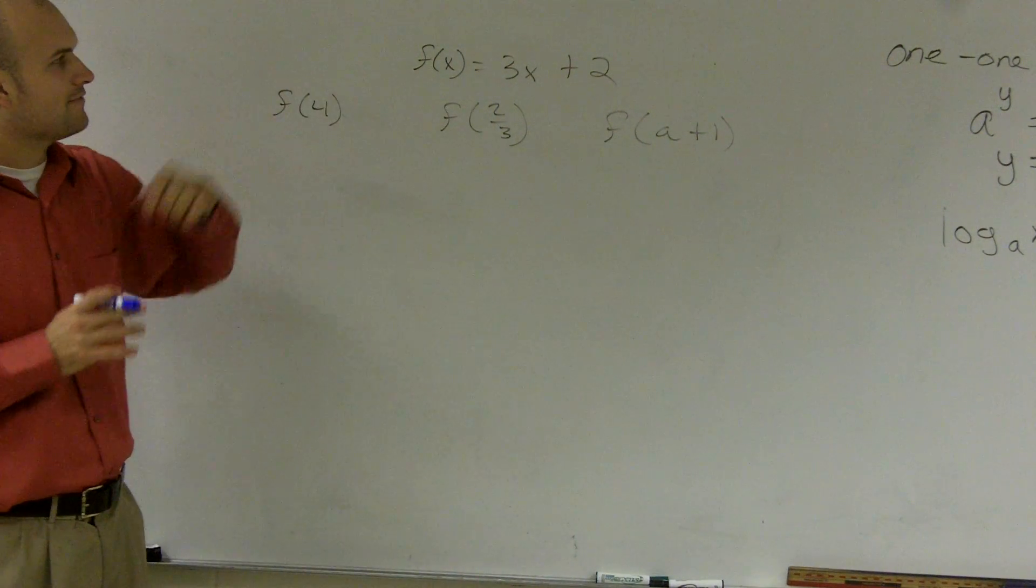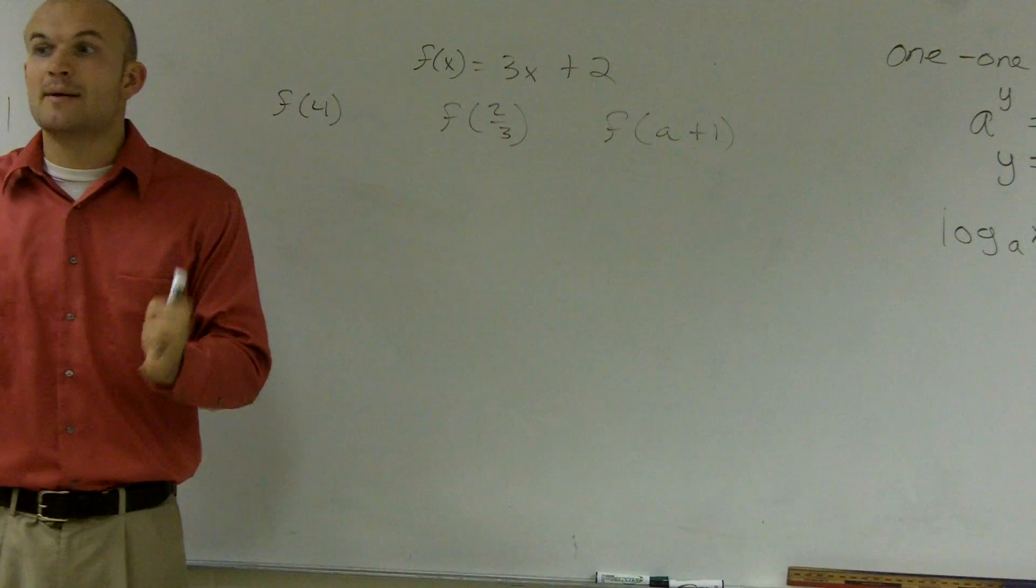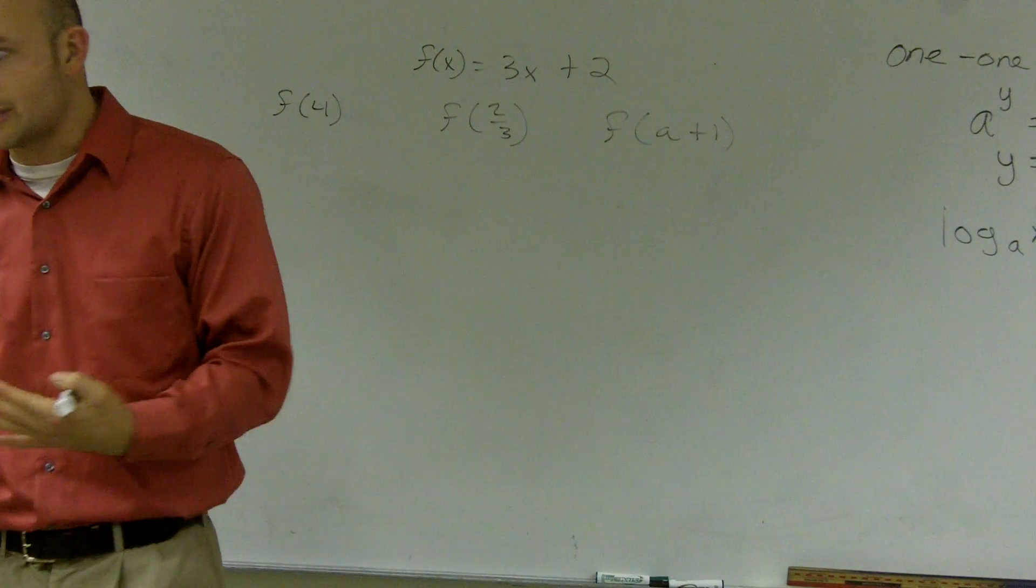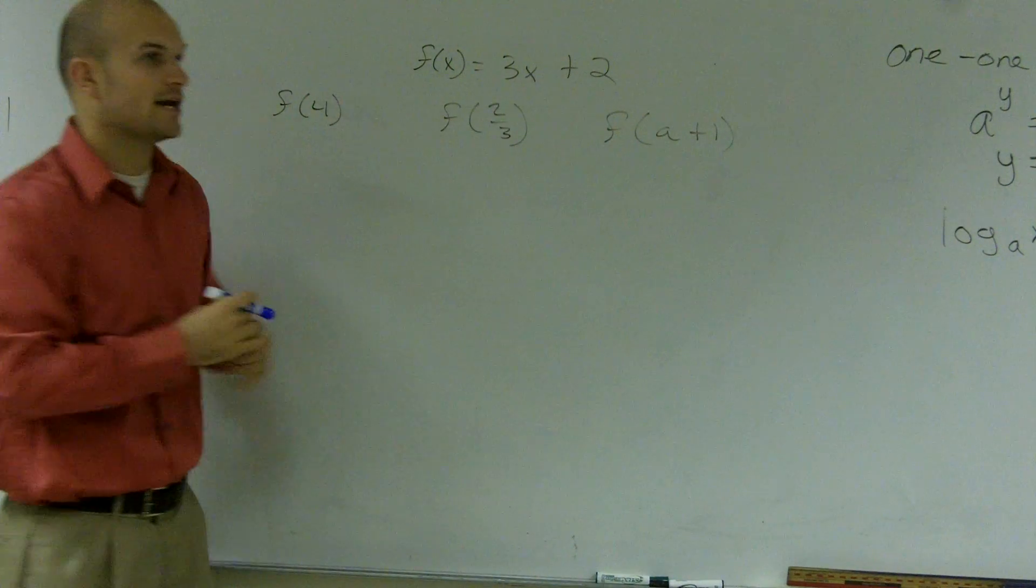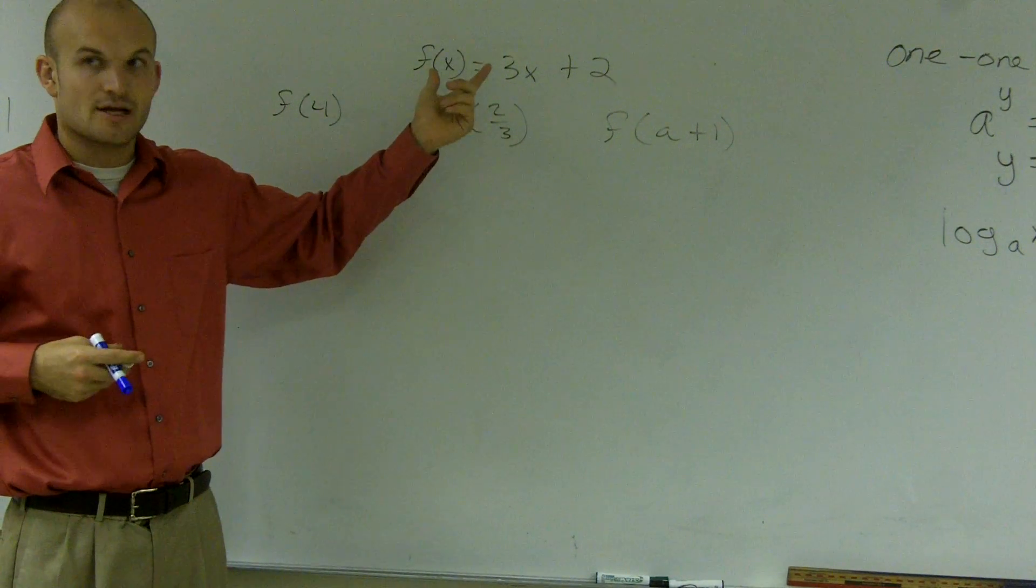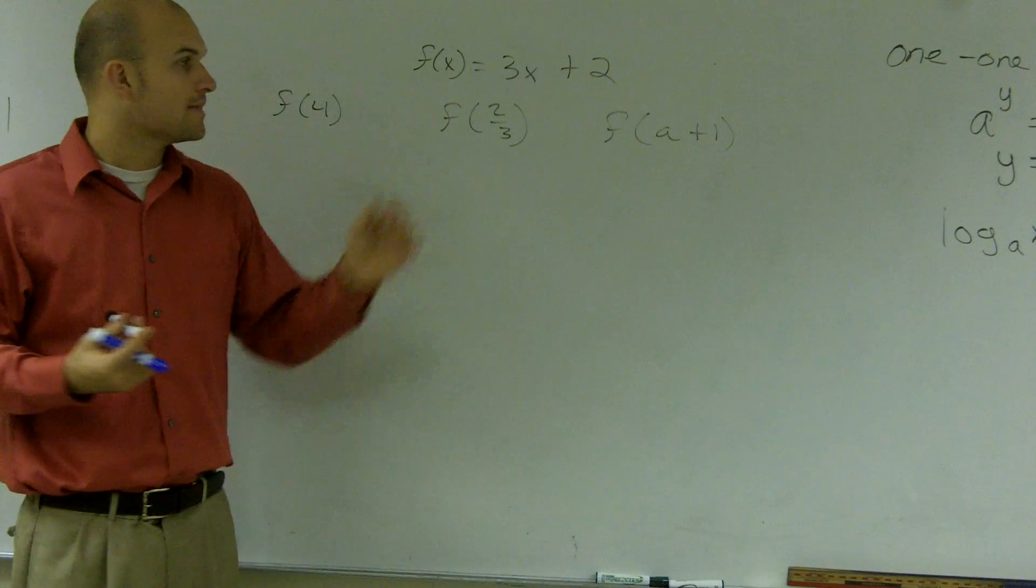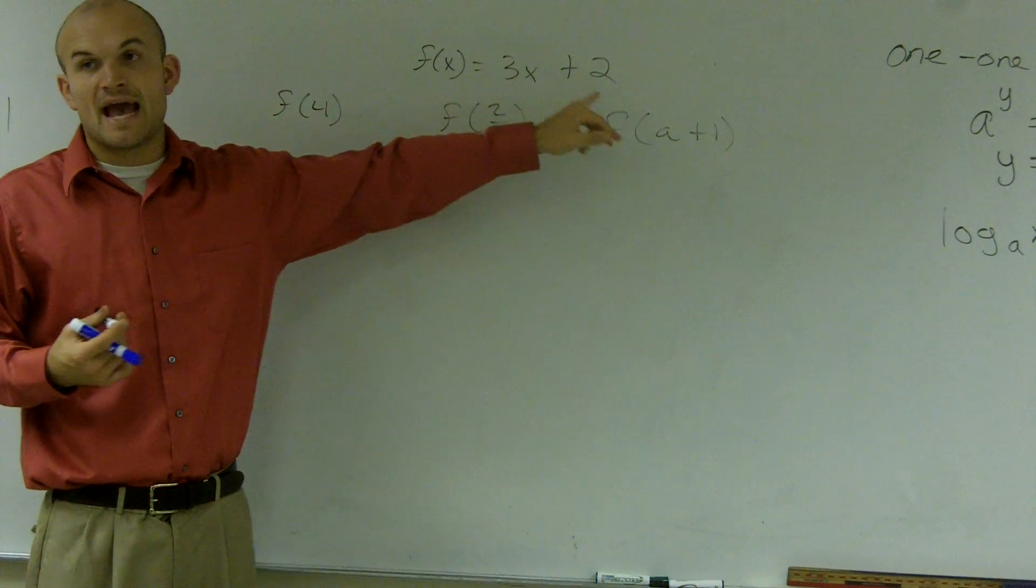What we have is a function, f of x equals 3x plus 2. Remember, a function is a relationship. It's a relationship between our input, which is our x, and our output, which is f of x. The relationship is multiply by 3, add 2.